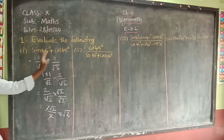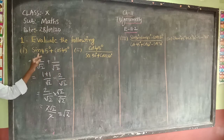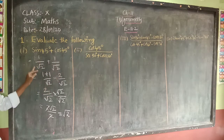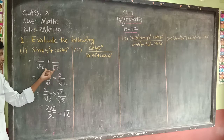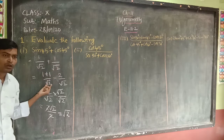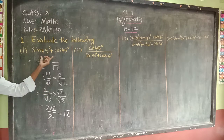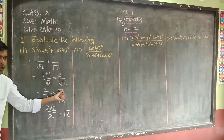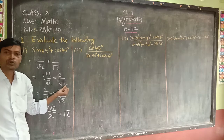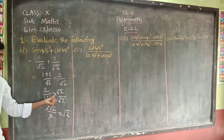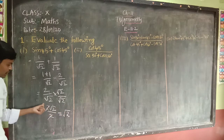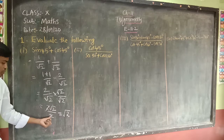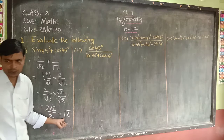Revision: sin 45° + cos 45° = 1/√2 + 1/√2. Both fractions have denominator √2, so we add numerators: 1 + 1 = 2, giving 2/√2. Rationalizing by multiplying by √2/√2 gives 2√2/2. The 2s cancel, so the final answer is √2.